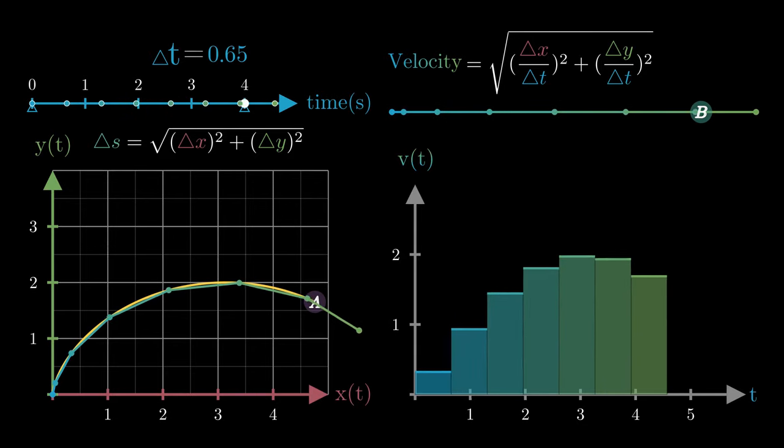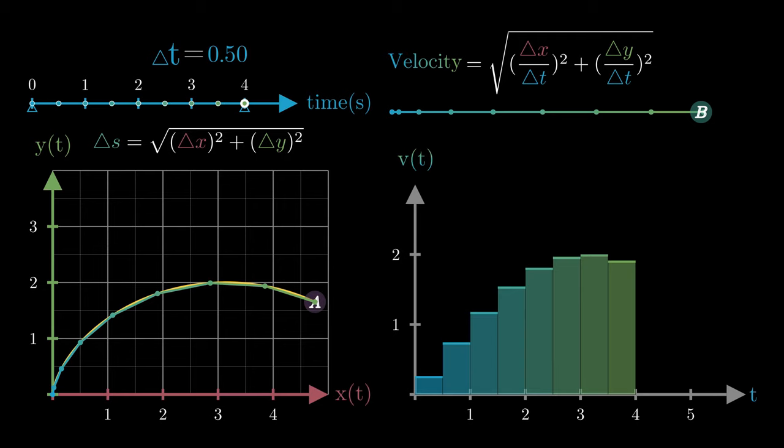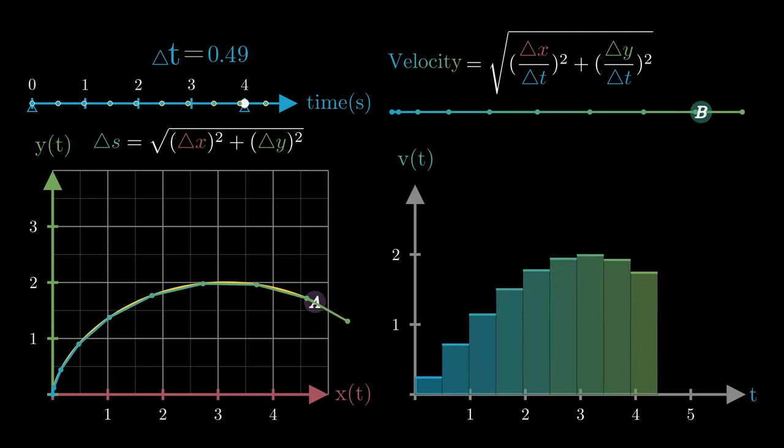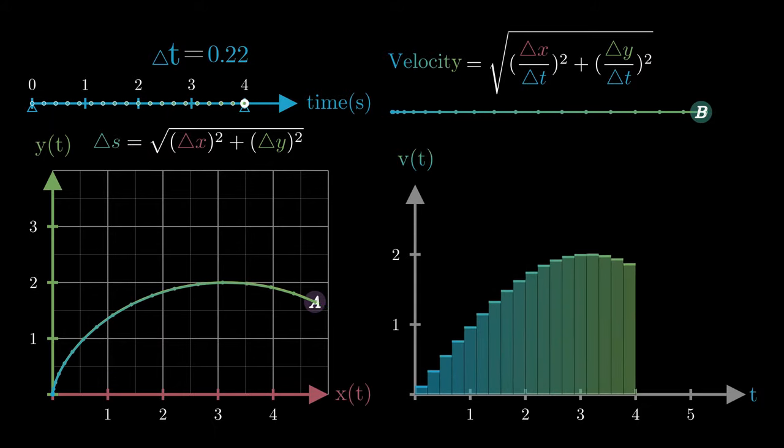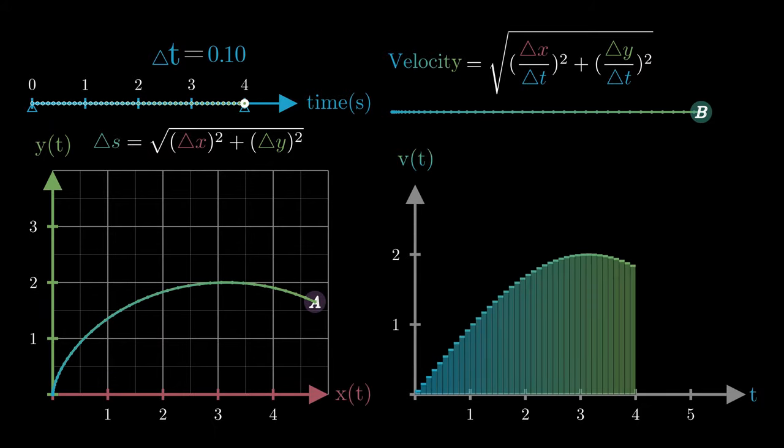As we decrease the size of our time step delta t and eventually let it approach 0 in the limit, the secant line assumption gets closer and closer to the actual curve. And that's exactly what we want. And when delta t approaches 0, the ratios delta x over delta t and delta y over delta t are nothing but their respective derivatives x prime of t and y prime of t.